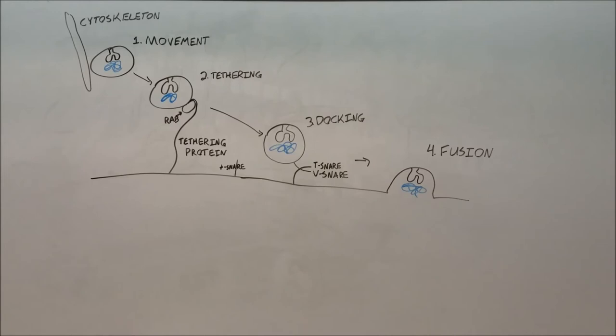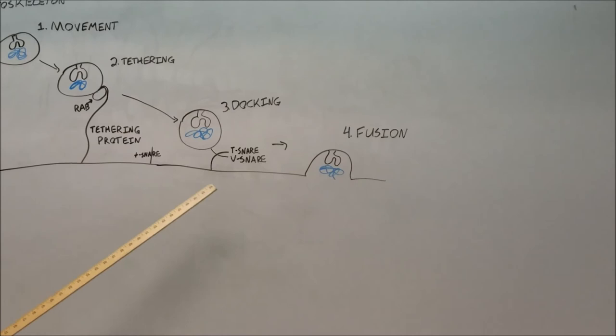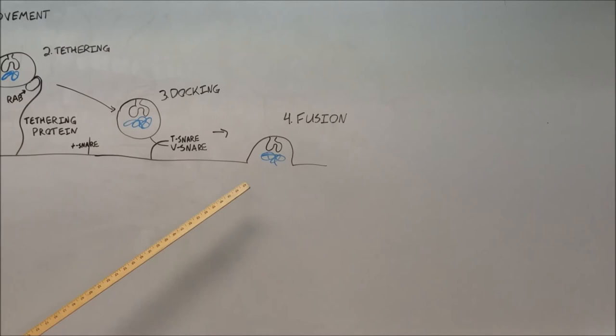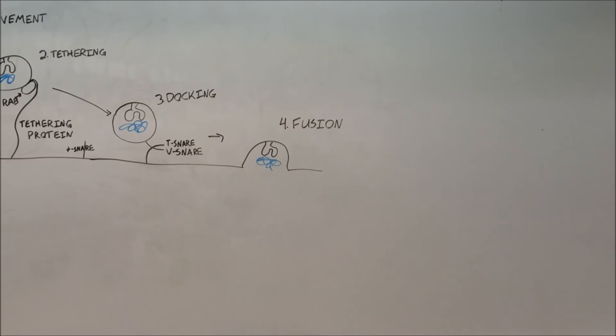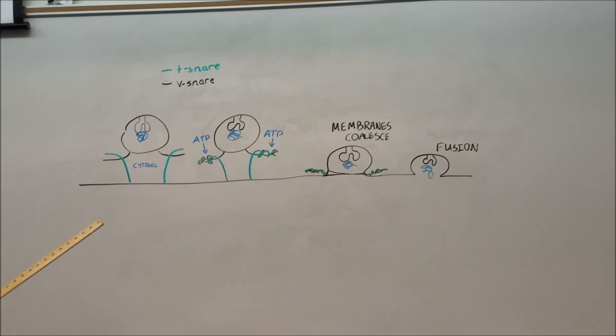The third step is docking. Eventually the tethering protein gets close enough that the T-snare and the V-snare begin their interactions. And then the final step is fusion of the membranes, which occurs after the T-snare and V-snare have brought the two membranes close enough together that they fuse, and the contents of the vesicle can be released into the target membrane and into the organelle or extracellular space.